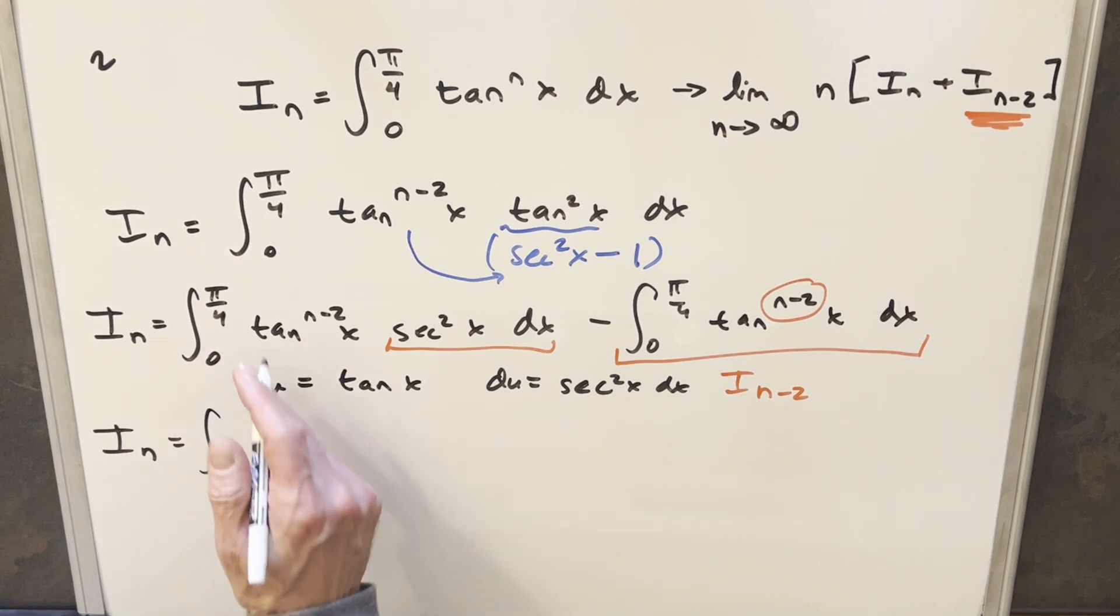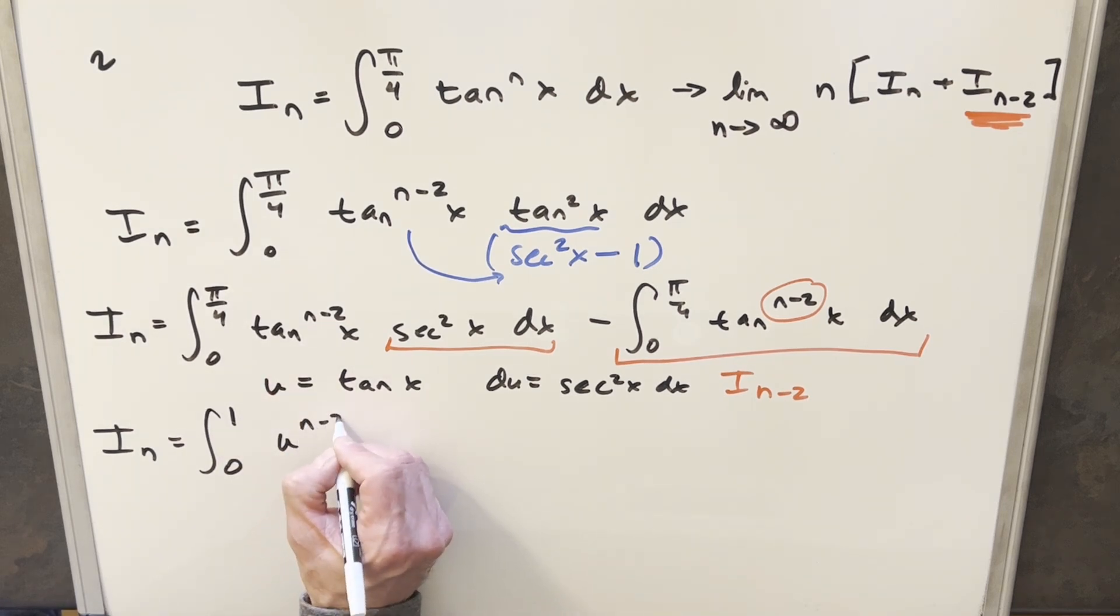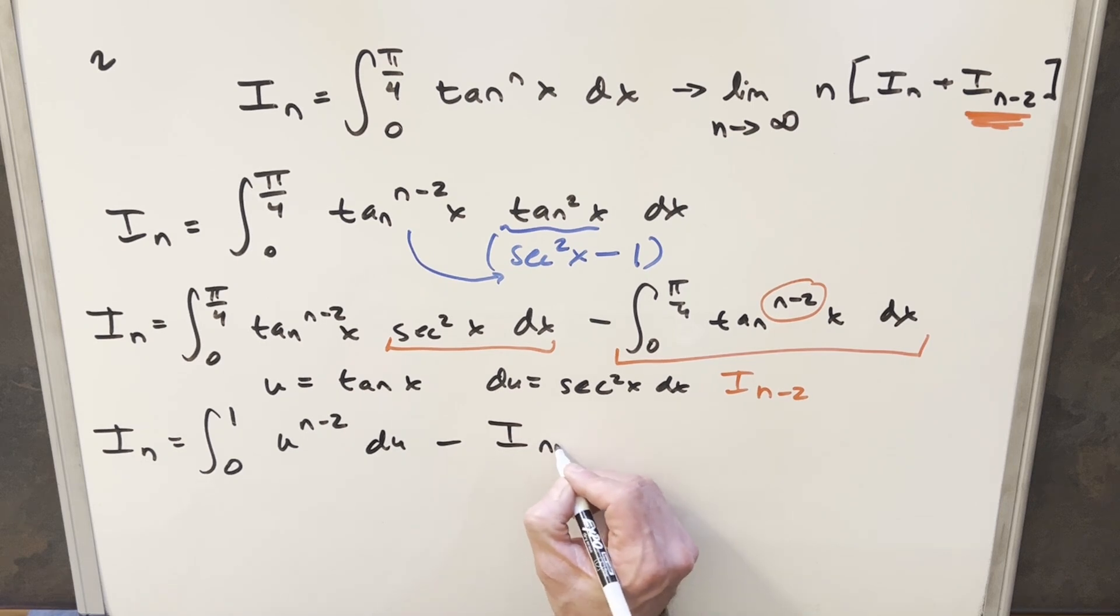Now, first for the bounds, evaluating π/4, plugging in tan of π/4, that's just 1. Evaluating tan at 0, that's just 0. So we're integrating now from 0 to 1. This right here is going to become just u to the n minus 2, and then all this stuff is just du. And like we found before, this is actually just going to be I sub n minus 2.